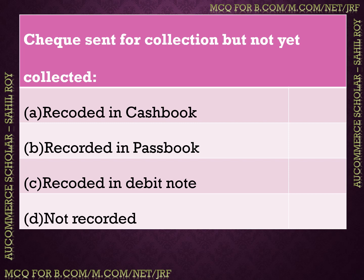Next question: check sent for collection but not yet collected — options: recorded in cash book, recorded in passbook, recorded in debit note, not recorded. The correct answer is recorded in cash book. Just like the previous question where we issued a check, here we are receiving — the check was sent for collection but not yet collected, so its entry is recorded in the cash book.